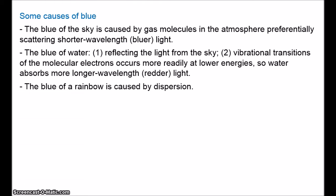The blue of a rainbow is caused by dispersion. Rainbows require sunlight and water droplets. Sunlight enters the water droplet and then is reflected off the back of the inner side of the droplet. Light travels at different speeds in different mediums — it travels slower in water than in air. So when light enters a water droplet, it's refracted; it bends a little. Shorter wavelengths bend slightly more than longer wavelengths, and the white light of the sun is dispersed into the colours of the spectrum.